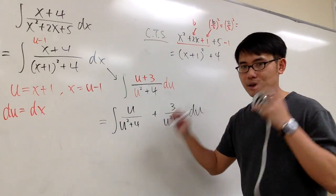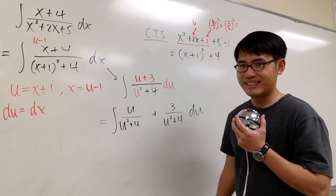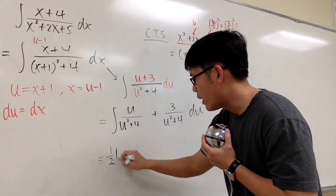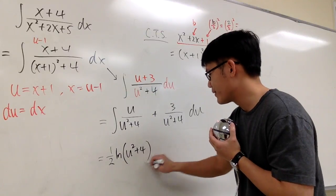The first one can be done by u substitutions again, so you can call that a w substitution, or the substitution in your head. Let me just tell you the answer. This is going to be 1 half ln parentheses u squared plus 4.